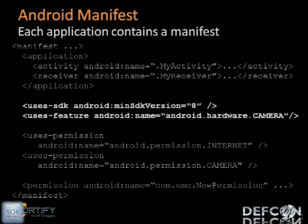The manifest also specifies application requirements — things like platform versions, input configurations, or specific hardware requirements. In this example, you can see that the developer is requesting the camera feature and is also requiring that the minimum SDK version be eight.